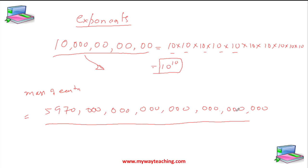12, 13, 14, 15, 16, 17, 18, 19, 20, 21. So we can write 5970 raised to power 21. So this is the way.